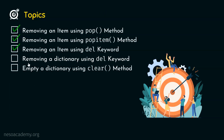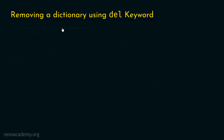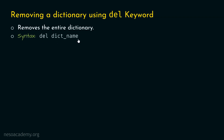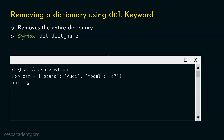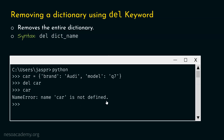Let's move on to the next topic: removing an entire dictionary using the del keyword. We can remove the entire dictionary by writing: del, followed by the dictionary name — for example, del car. Let's hit enter, then type 'car' and hit enter again. We get an error: 'NameError: name car is not defined.' This is a clear indication that the car dictionary no longer exists. That is why we get this error — car is not defined.